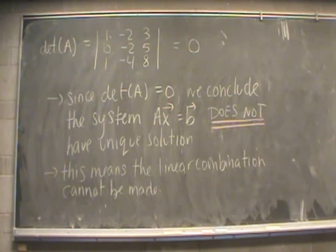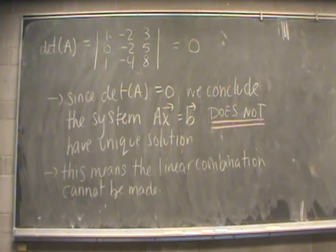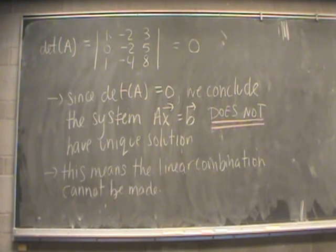Since the determinant is equal to zero, we conclude the system does not have a unique solution. This means the linear combination cannot be made — our starting matrix cannot be expressed as a linear combination of those other three matrices.